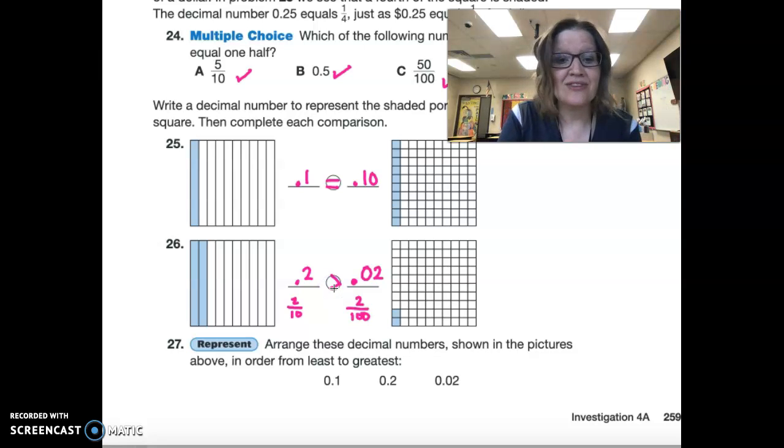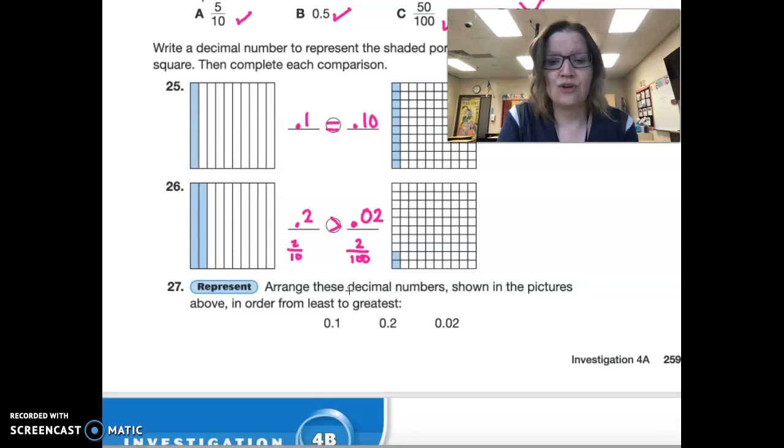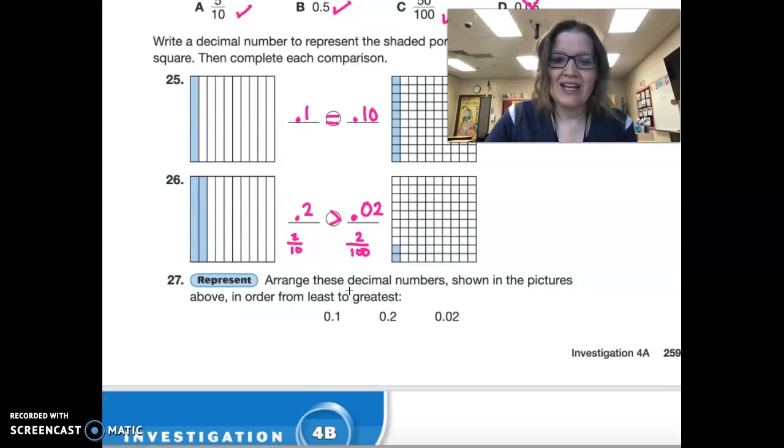So, 2 tenths is greater than 2 hundredths. Let's arrange these decimal numbers. First off, which is going to be from the least? Definitely. It is going to be 2 hundredths. Our next one is going to be 1 tenth. And our final greatest number is going to be 2 tenths.